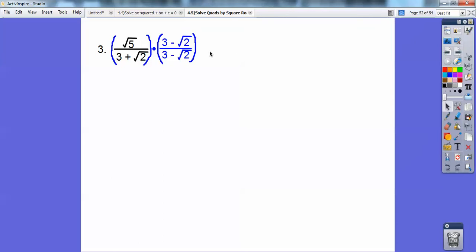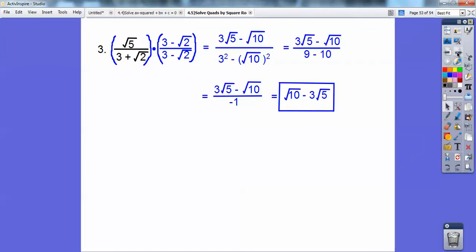So go ahead and distribute root 5 times 3 is 3 root 5. Root 5 times root 2 is root 10. I can multiply them if they're both inside, and it's a minus in between them. On the bottom, it's going to be 3 squared minus root 2 squared. So there we go, and it wraps up to, and I end up getting 9 minus 10, which is negative 1, and then 2.